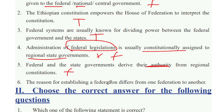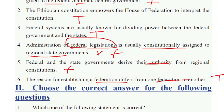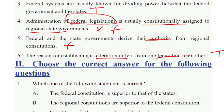The reason for establishing a federation differs from one federation to another. Here is the difference between America, Germany, Switzerland, and India. America and India are federations of a certain type and they are different from one another.